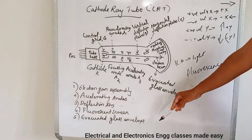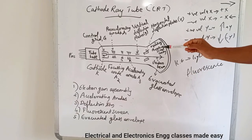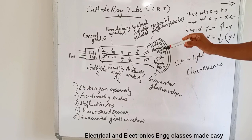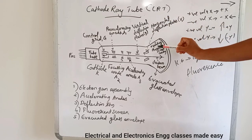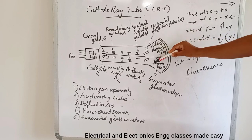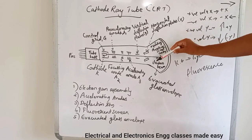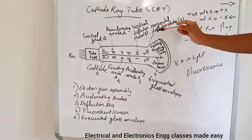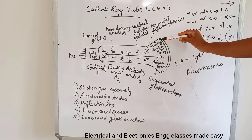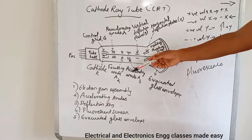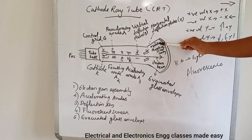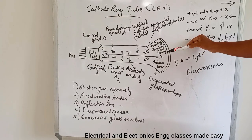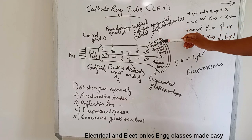Next is the evacuated glass envelope. The inner walls of the flared part of the tube, except for the screen, are coated with a conducting graphite substance called aqua dag. It is maintained at the same potential as the focusing anode A2. This coating performs two functions: it accelerates the electron beam to the screen to produce a spot of light after it passes between the deflecting plates.